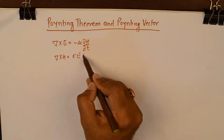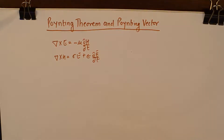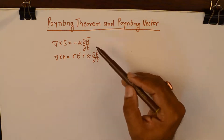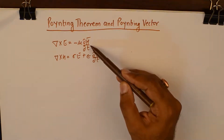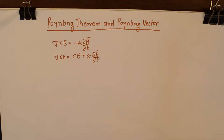I am writing down the curl equations — the third and fourth equations of Maxwell — because these equations talk about the time rate of change of energies. This equation talks about the time rate of change of magnetic field intensity, and this equation talks about the time rate of change of electric field intensity. I will first derive the Pointing Theorem and then we will talk about the physical interpretation of its terms. The derivation is pretty simple.